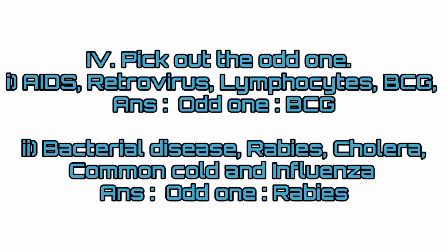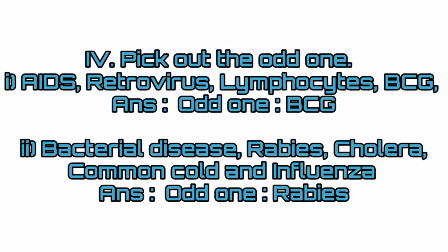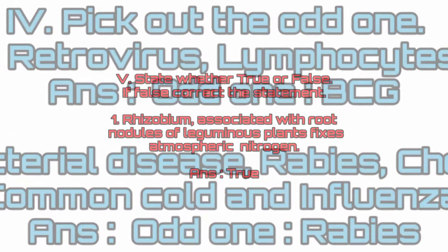Pick out the odd one: AIDS, Retrovirus, Lymphocytes, BCG. Answer: The odd one is BCG. Bacterial disease — Rabies, Cholera, Common Cold, and Influenza. Answer: The odd one is Rabies.